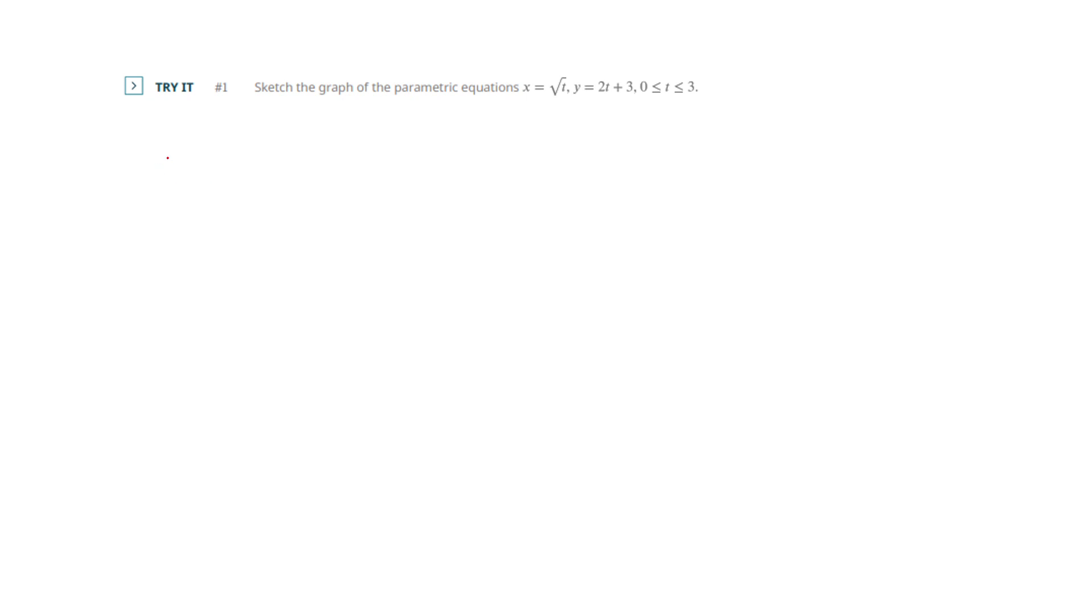Okay, so the same idea here. What we've got, I've got t, I've got x sub t, and y sub t. So what's changed with parametric is that I'm going to arbitrarily pick the values of t, although they did tell us they wanted us to go between 0 and 3. So here's a pretty natural selection, 0, 1, 2, and 3.